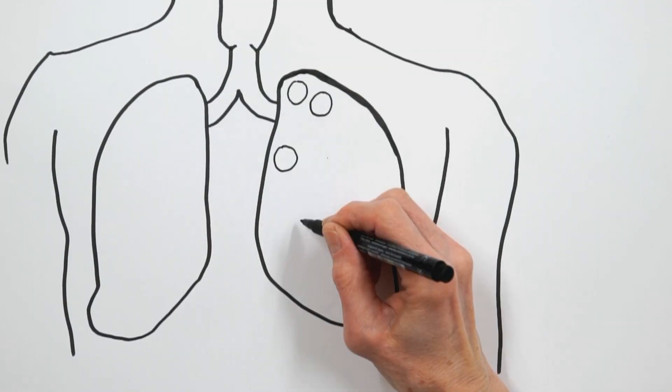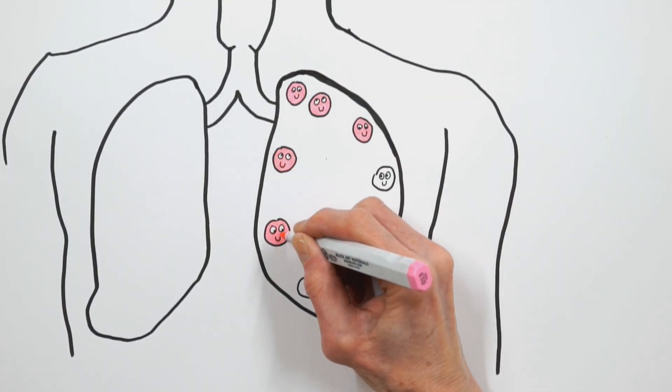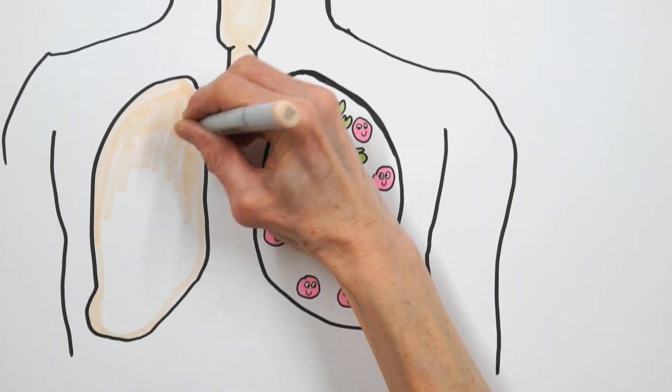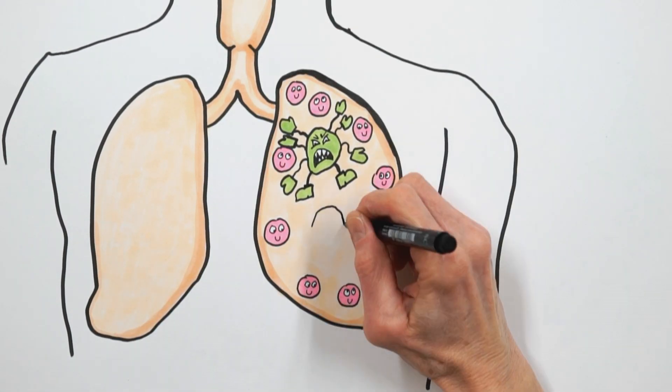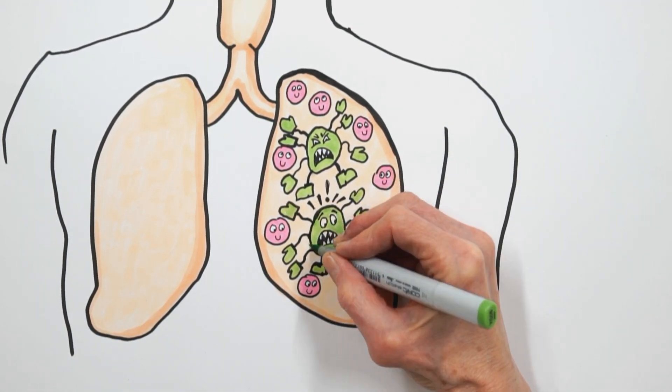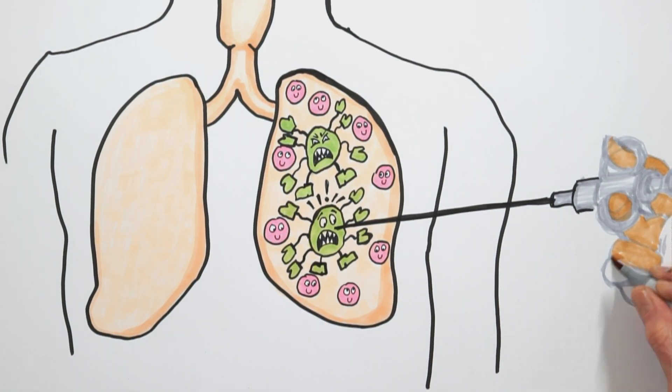When doctors suspect a patient may have cancer, the first step is to take a tissue sample, called a biopsy. For example, if a patient has a growth in their lungs, the doctor will use a needle to take a small biopsy of it.